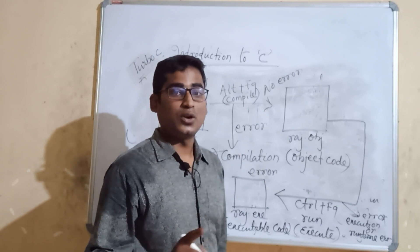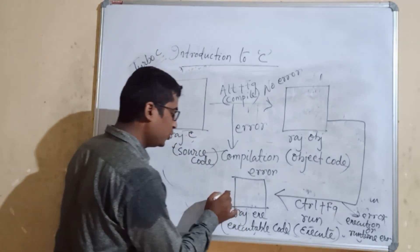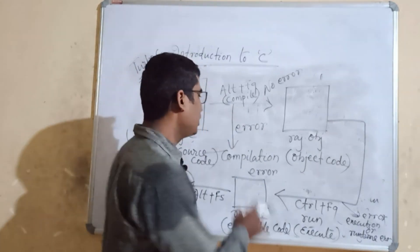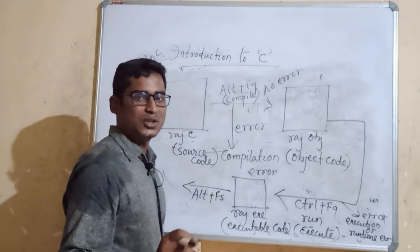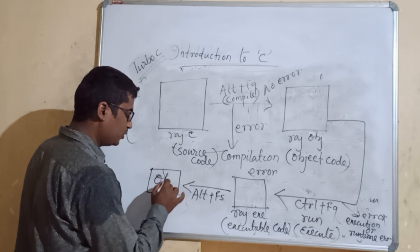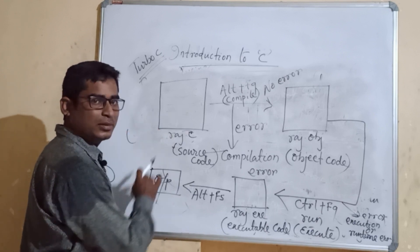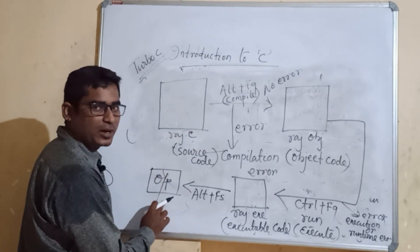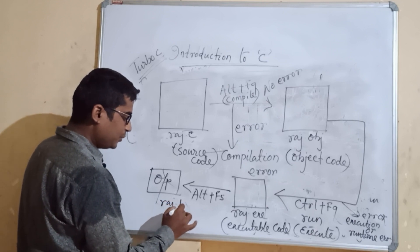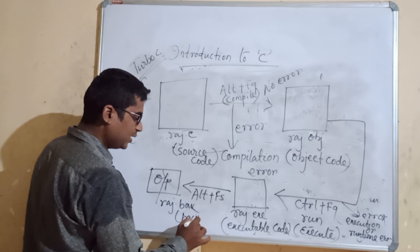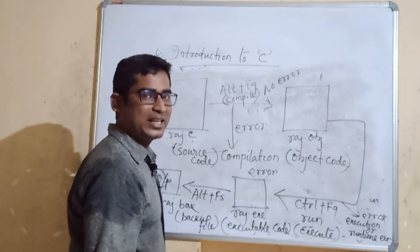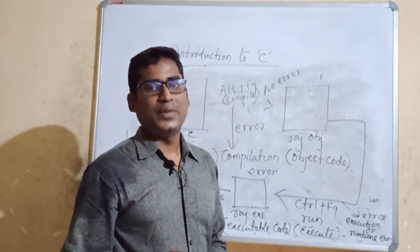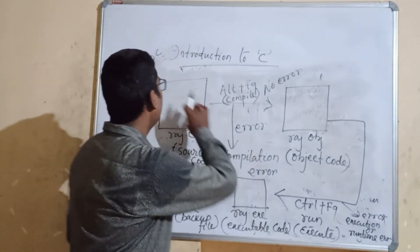After execution, you get the output. Additionally, another file is created — raj.bak — which is a backup file. The computer automatically creates this backup file during the process. Depending on the IDE used, the process may vary slightly, but the overall flow remains the same.